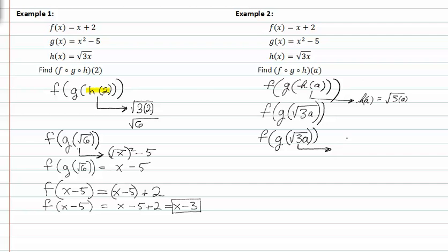g of x is x squared minus five, so since x was here I'm going to put root three a in for x. This gives me f of something. This is going to equal three a minus five, so g of root three a is equal to three a minus five.